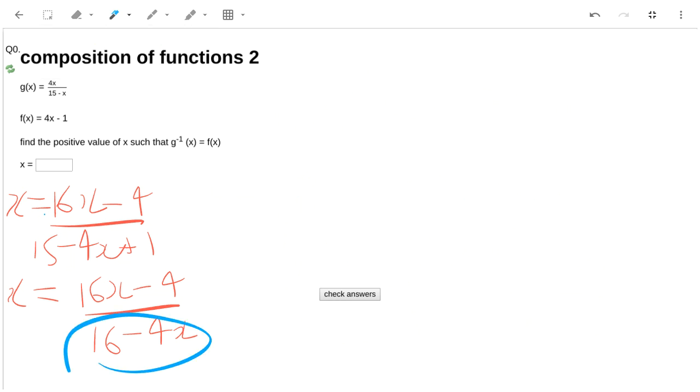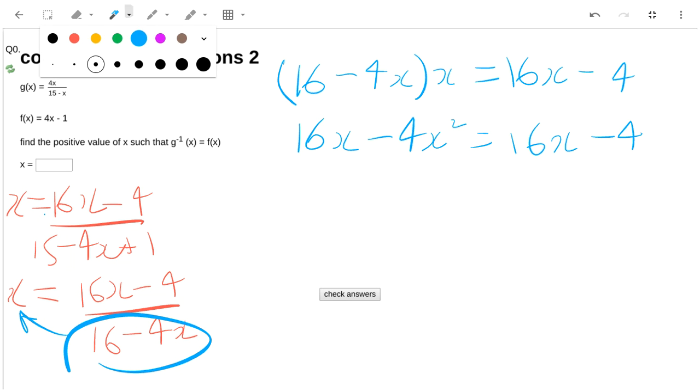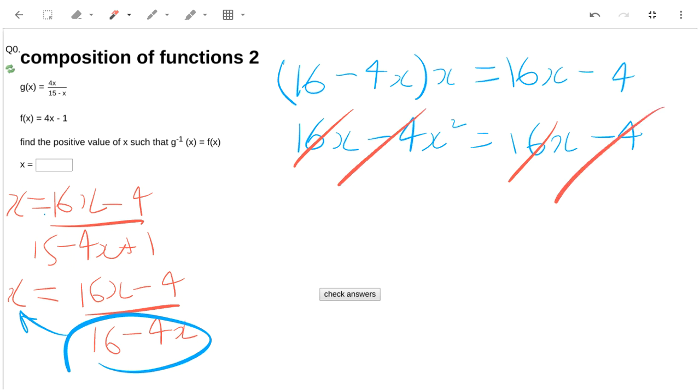Take the bottom here and multiply it by the other side. So I get 16 minus 4x times x equals 16x minus 4. That gives me 16x minus 4x squared equals 16x minus 4. So the 16x cancel, and the 4x cancel as well. If I divide everything by minus 4, then I get x squared equals 1.